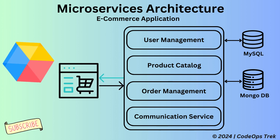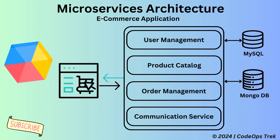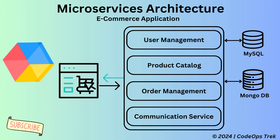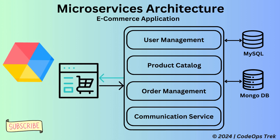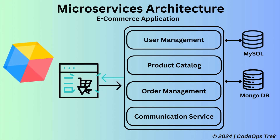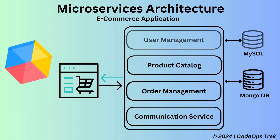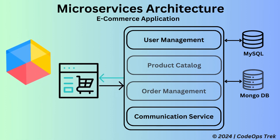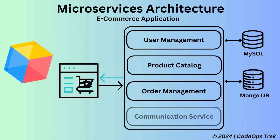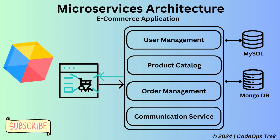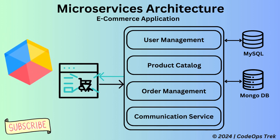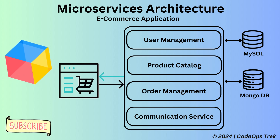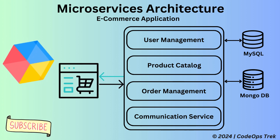Let's understand this with an example. Consider a classic e-commerce platform where user management, product catalog, order management, and a communication service are all part of one large application. User management uses MySQL for structured user data, while both the product catalog and order management use MongoDB for flexible product and order information. The communication service handles notifications and messaging. While this setup might simplify initial development and deployment, as the application grows, it becomes increasingly difficult to scale and maintain.